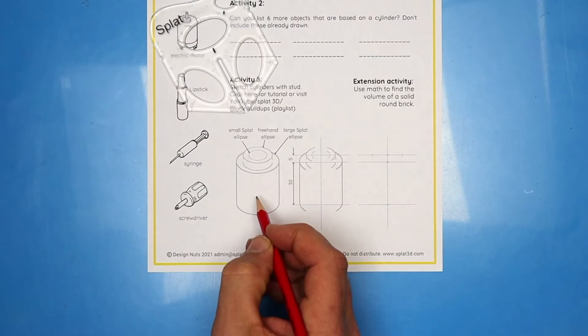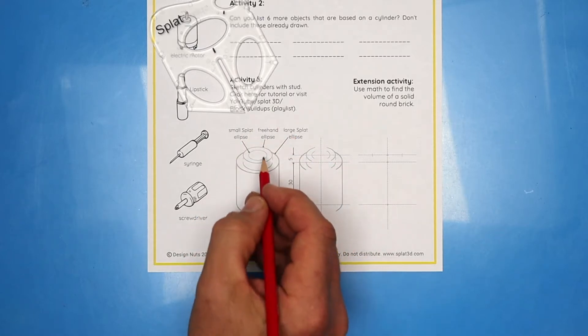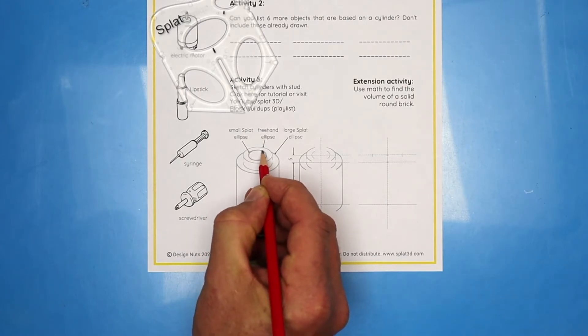First, let's get a feel for drawing an ellipse by tracing over this drawing. Practice drawing in the air. I'm running the pencil around and around just above the paper. Then draw one ellipse.